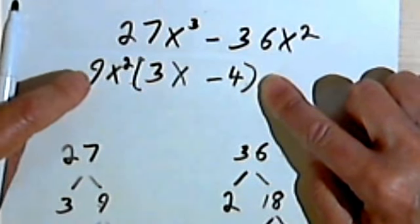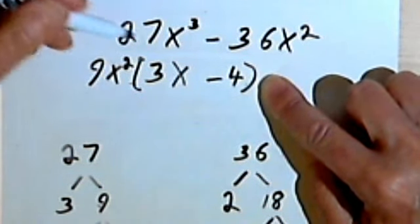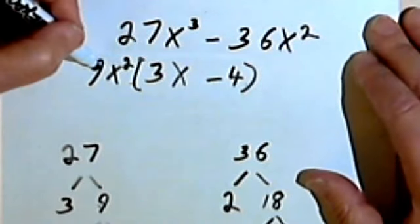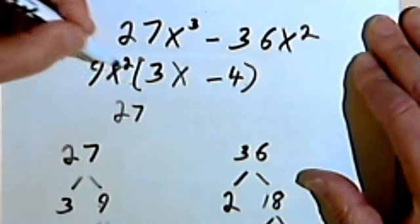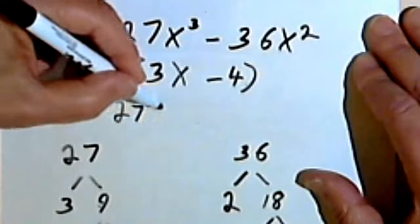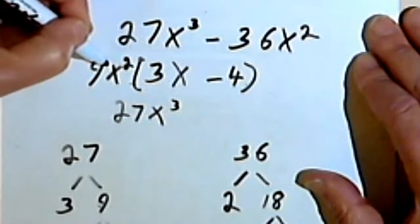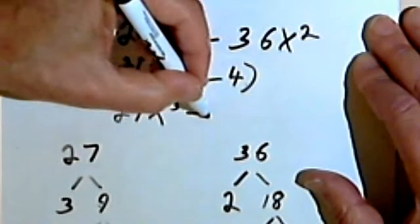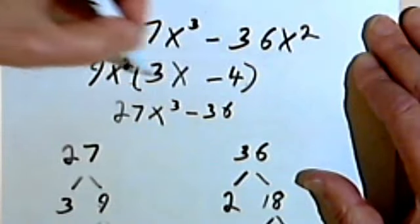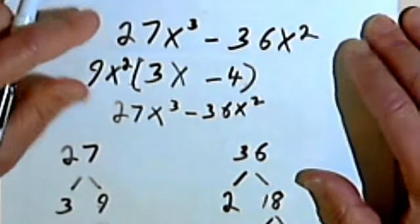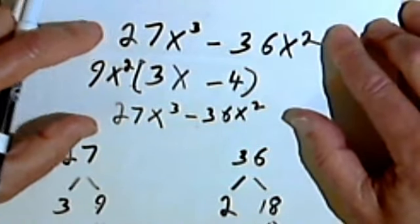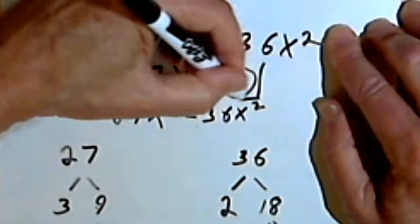And as we've done before, we can check this by multiplying it out to make sure it's right. So 9 times 3 is 27. x squared times x is x to the 3rd. 9 times negative 4 is negative 36, then I've just got an x squared. That's the same place I started, so this factorization will work.